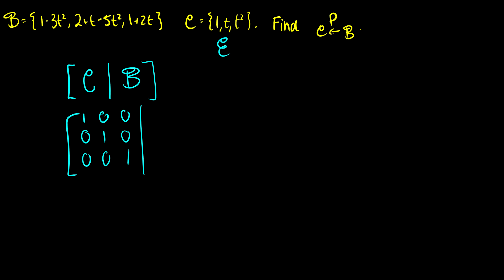And then for our basis B, so 1 minus 3t squared is 1, 0, negative 3, then 2, 1, negative 5, and 1, 2, 0. Oh, but look at this. We have i. So this must mean that this is P to C or P from B to C. So we already have our change of basis matrix. And well, of course, this is because this is just going to the standard basis.